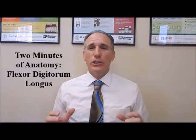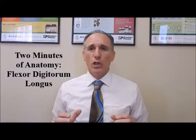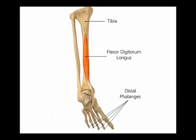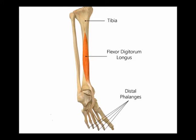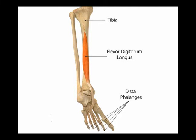It is the flexor digitorum longus. The flexor digitorum longus originates on the posterior side of the tibia, just distal to the popliteal line. It inserts onto the plantar surface of the distal phalange of toes two through five.